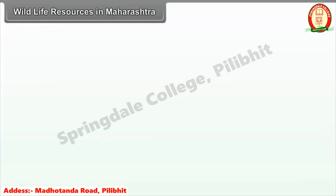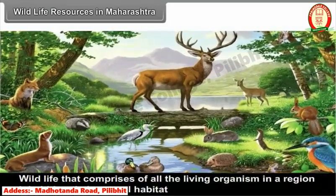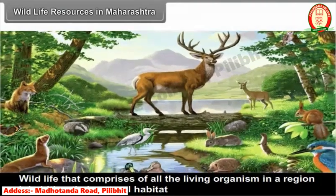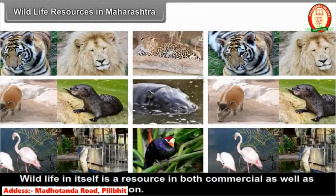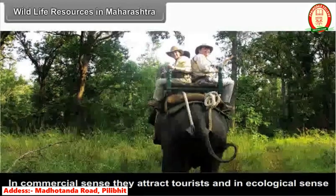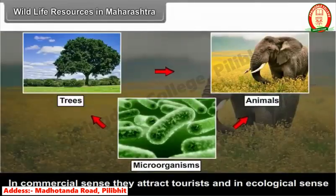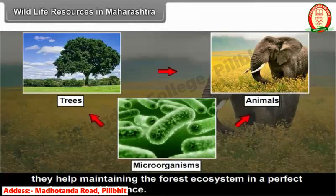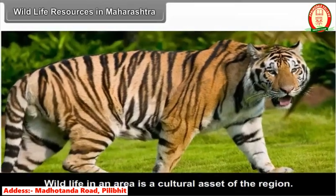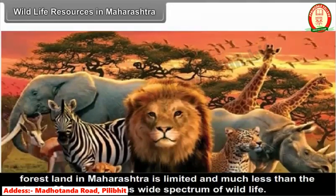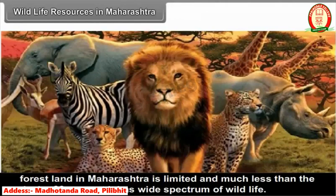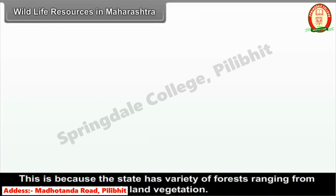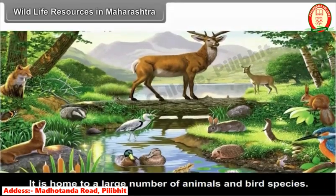Wildlife comprises all living organisms in a region inhabiting their natural habitat and is included in wildlife resources. Wildlife is a resource in both commercial and ecological terms — commercially they attract tourists, and ecologically they help maintain the forest ecosystem in a perfect environmental balance. Wildlife in an area is a cultural asset of the region. Though forest land in Maharashtra is limited at much less than the desired 33%, it has a wide spectrum of wildlife because the state has a variety of forests ranging from semi-evergreen to scrubland vegetation.